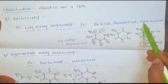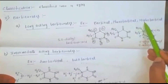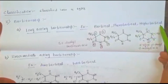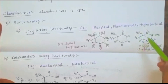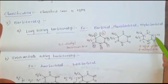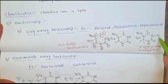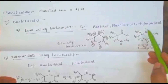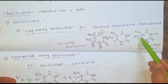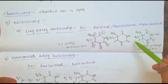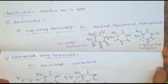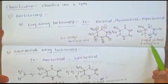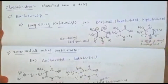Mephobarbital: 'me' indicates methyl, 'pho' indicates phenyl, and 'barbital' refers to barbituric acid. A methyl group is substituted at the first position on nitrogen, and a phenyl group is substituted at the fifth position. The nomenclature is 5-ethyl, 1-methyl, 5-phenyl barbituric acid.